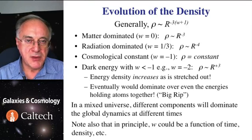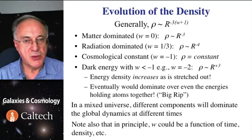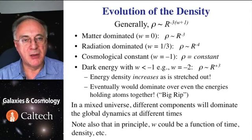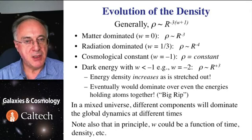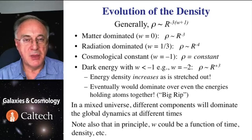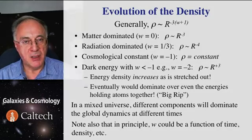In a realistic universe, there'll be a mixture of these components, and the expansion will change. At different times, different components will determine how the universe is expanding, because some of them decline in density faster than the others. Also, remember that we have assumed that w is constant, but it need not be. In itself, it can be changing as a function of time, but we have no theory whatsoever which could indicate why would that be and how.